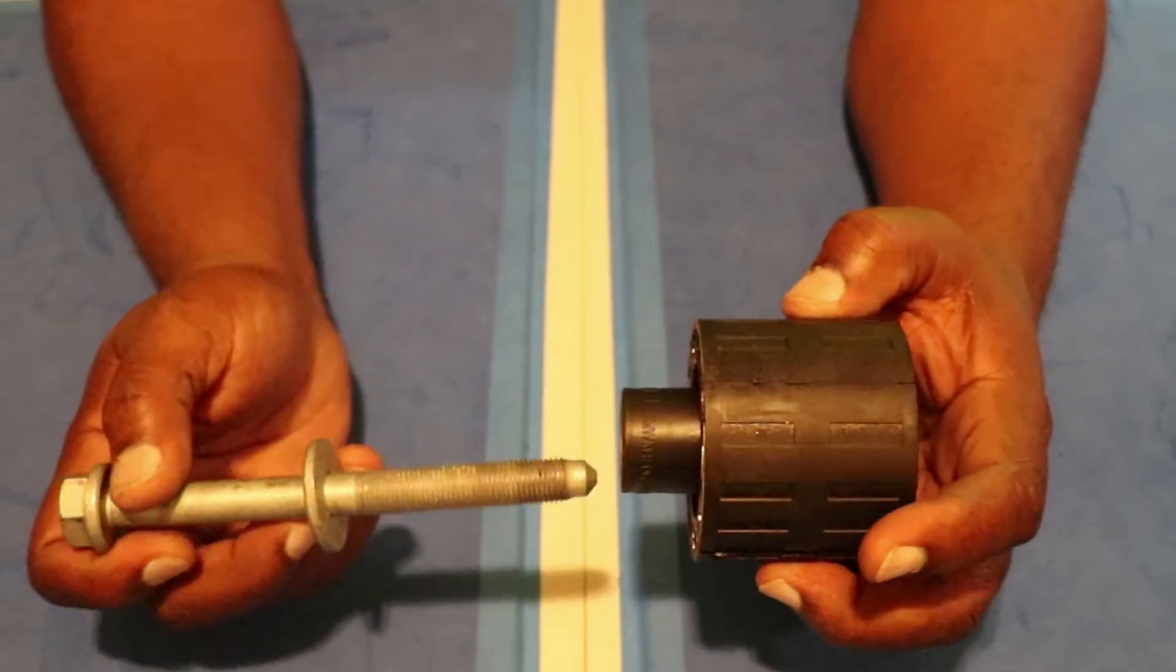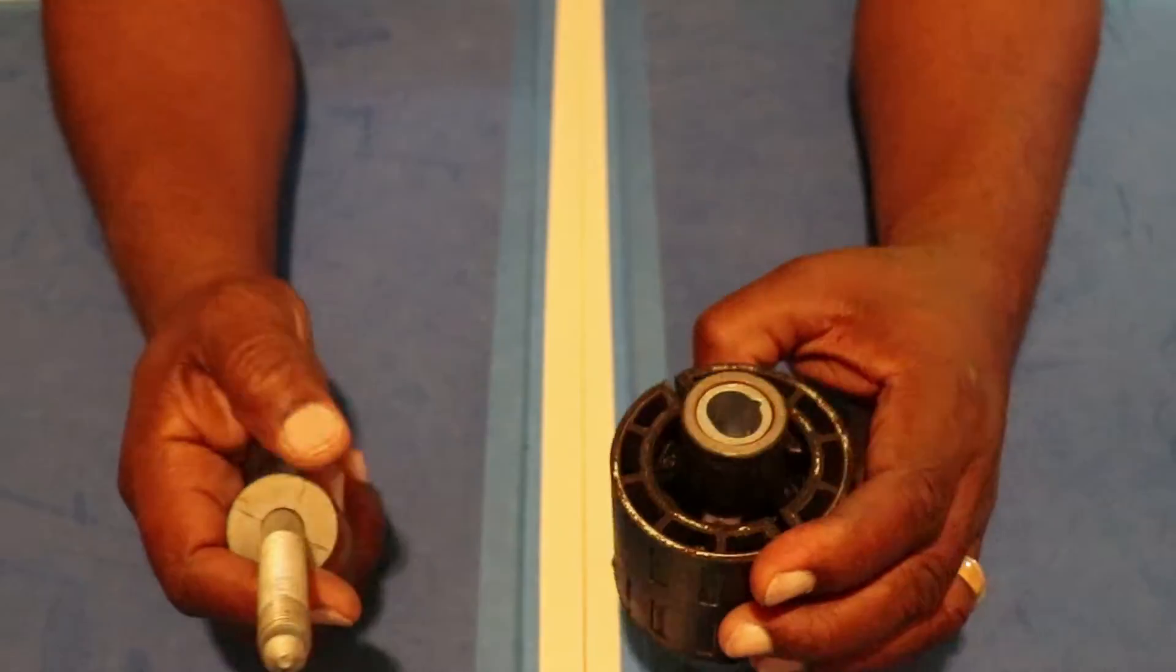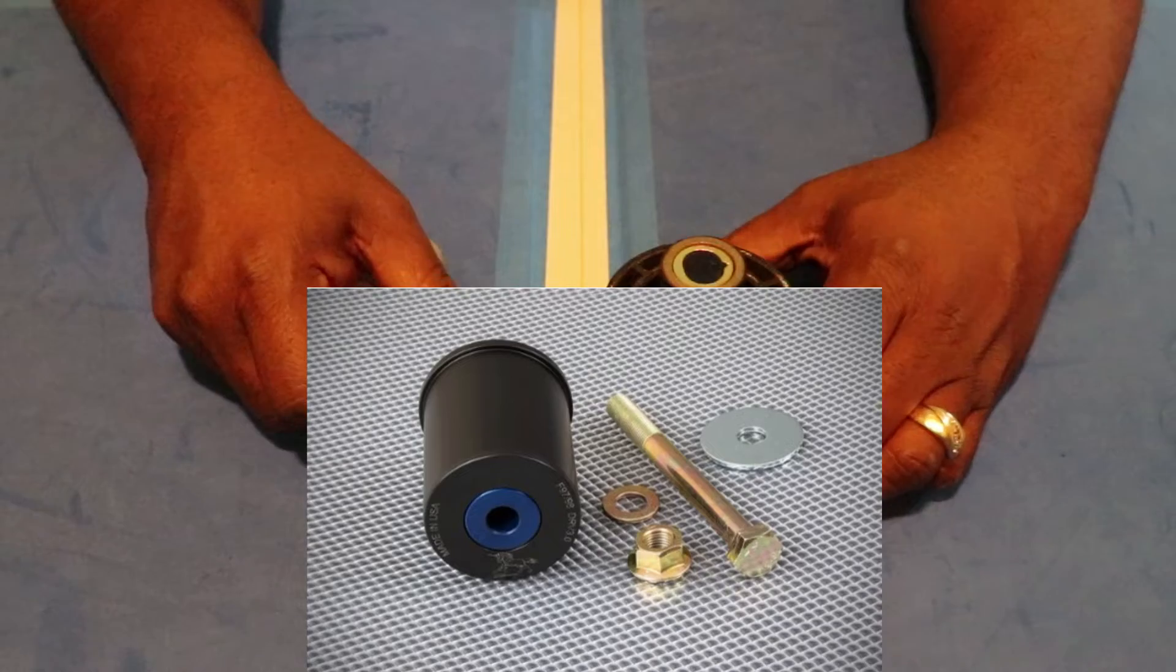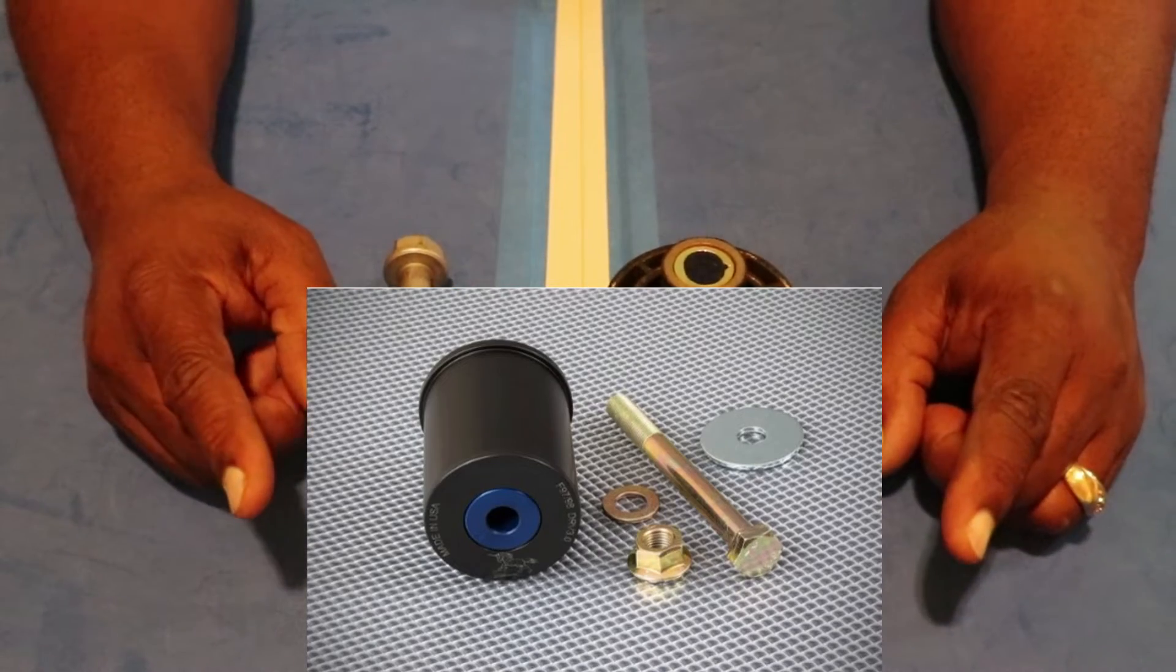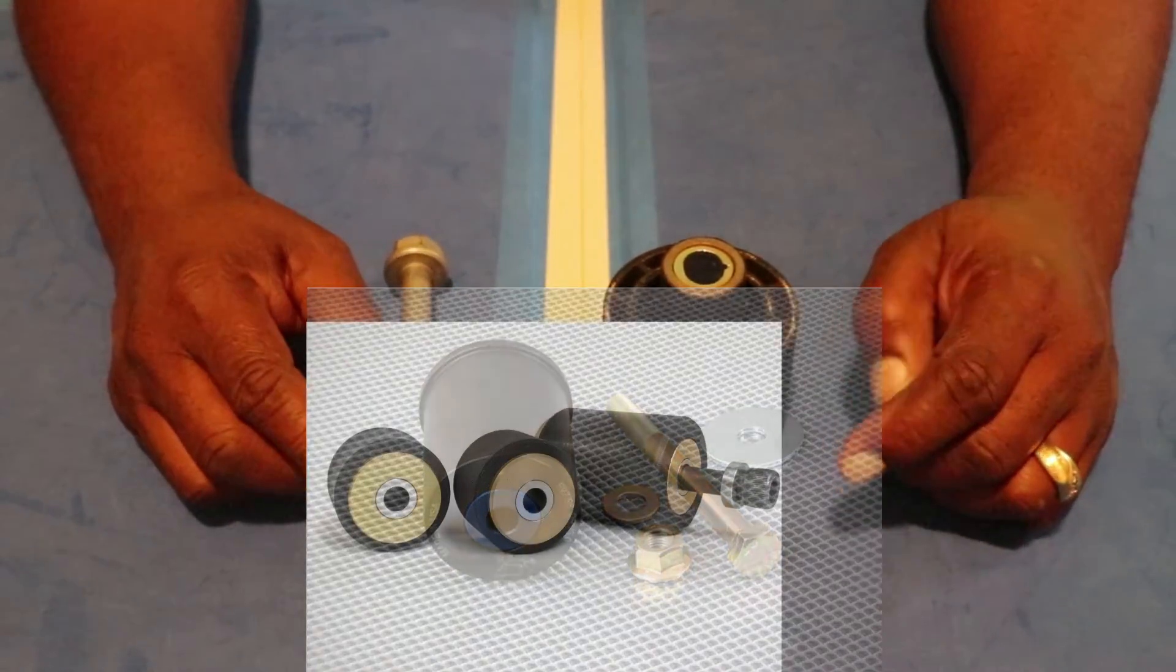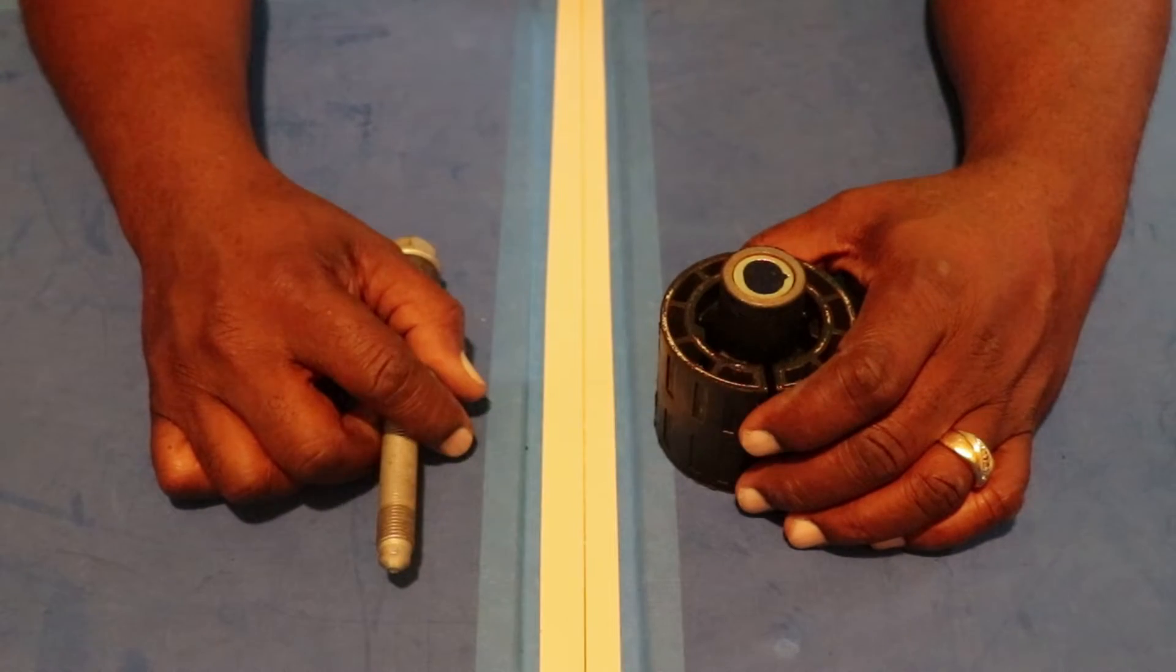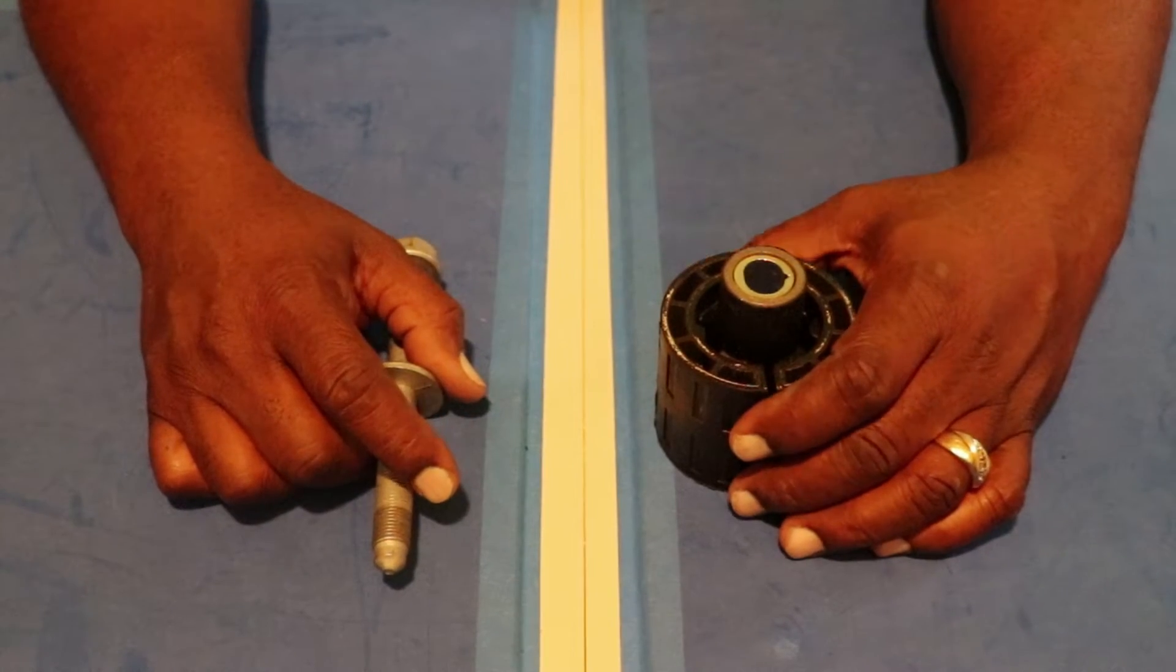So the solutions that are on the market, there are three right now that I know of. Number one, Einhorn, excellent solution. MoFab, excellent solution, especially for high horsepower vehicles. Both of those are excellent solutions.